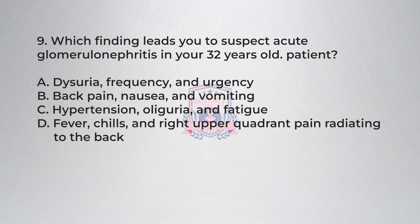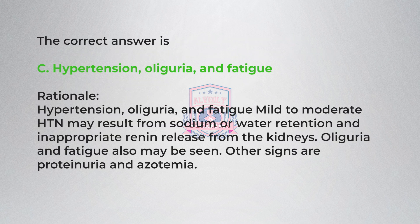Question 9: Which finding leads you to suspect acute glomerulonephritis in your 32-year-old patient? A) Dysuria, frequency, and urgency, B) Back pain, nausea, and vomiting, C) Hypertension, oliguria, and fatigue, D) Fever, chills, and right upper quadrant pain radiating to the back. Correct answer is C, hypertension, oliguria, and fatigue.